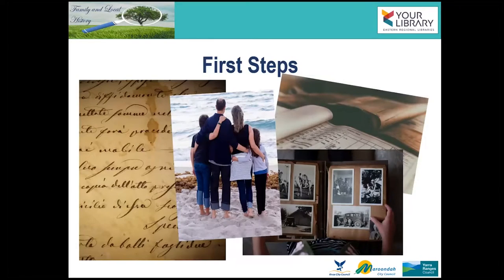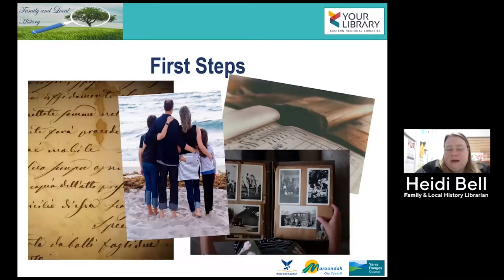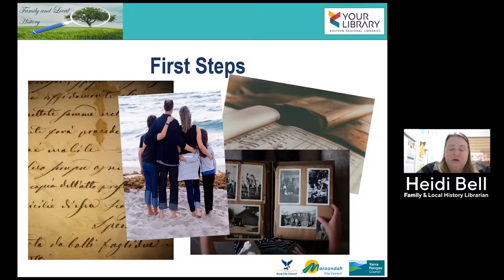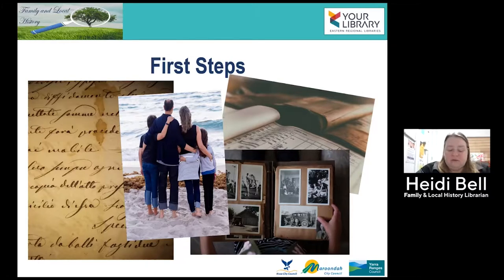So let's look at the first step. But before we do that, let's look at a couple of golden rules. The first rule is always start with the known and move into the unknown — in family history, this means beginning with yourself and moving backwards to previous generations, one generation at a time. The second rule is to prove your work every step of the way, by looking at primary and secondary resources. The third rule is to keep accurate records about the sources and references looked at as the results of your research.